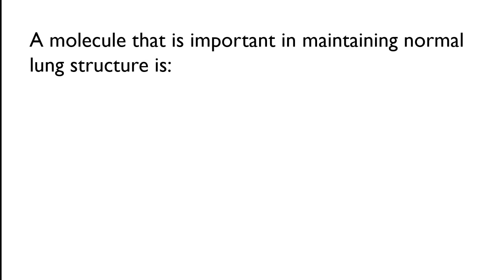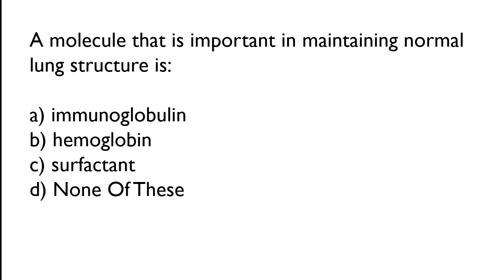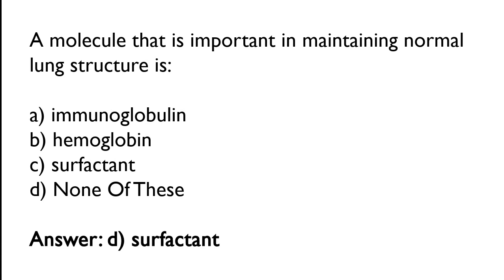A molecule that is important in maintaining normal lung structure is: immunoglobulin, hemoglobin, surfactant, none of these. The correct answer is option D — a molecule important in maintaining normal lung structure is surfactant.